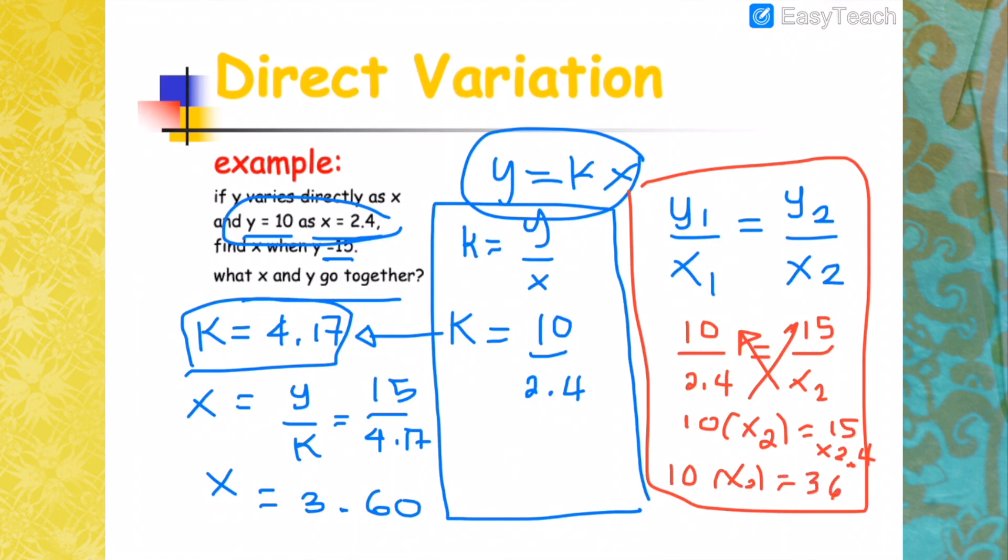So you have 10 times X2 equals 36. And therefore, X2 equals 36 divided by 10. You will get X2 which is 3.6. So that means either way, you will get exactly the same value.